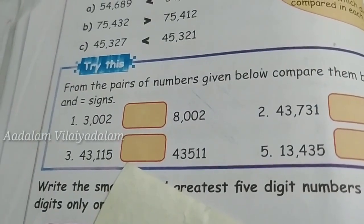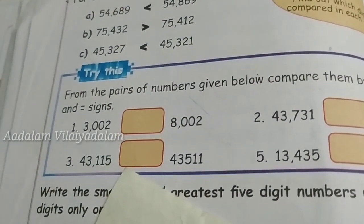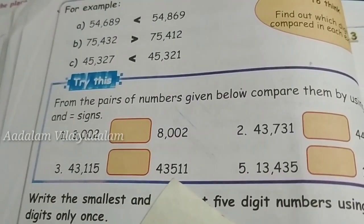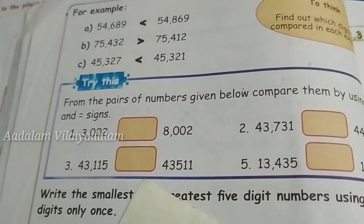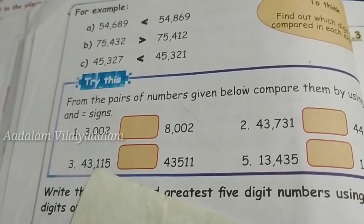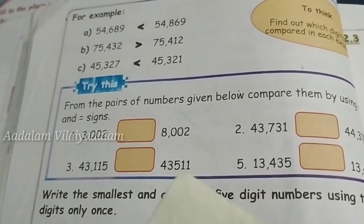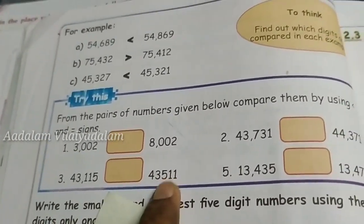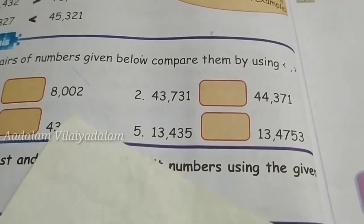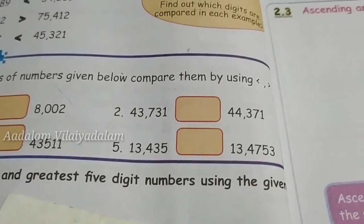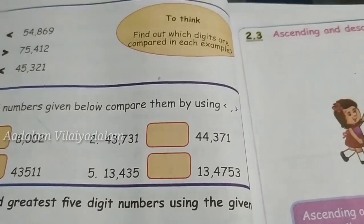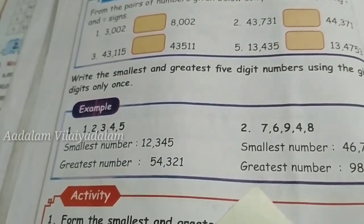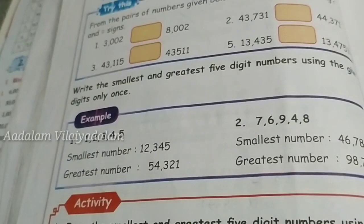Next, forty-three thousand one hundred and fifteen compared to forty-three thousand five hundred and eleven. Look at the hundreds place — one hundred versus five hundred — so the second number is greater. You can easily find the greater or lesser sign by comparing place values.